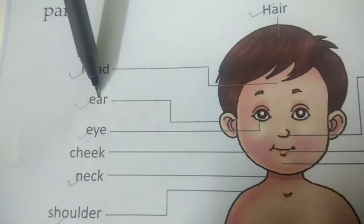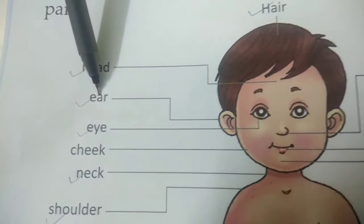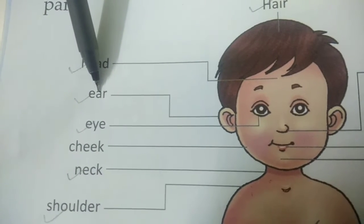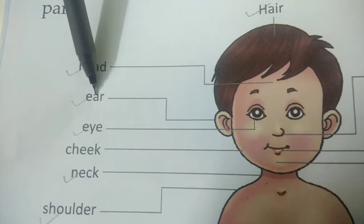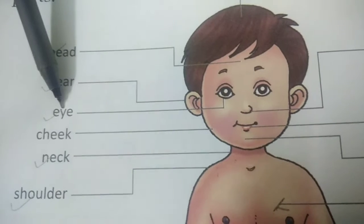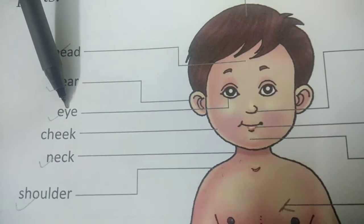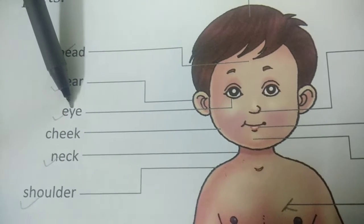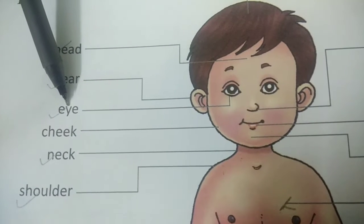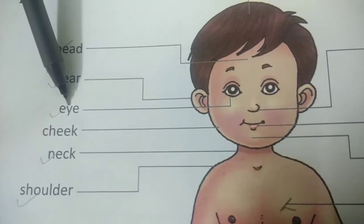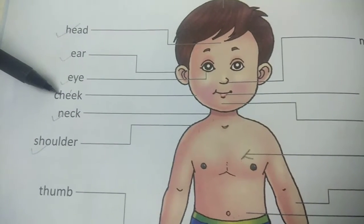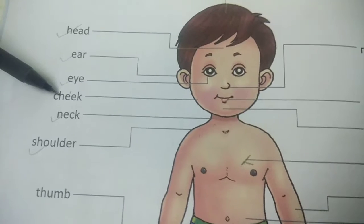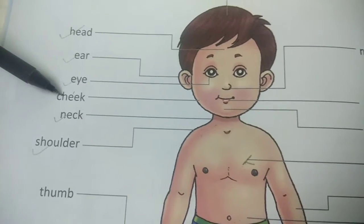Ear: one of the five sense organs which enable us to hear sounds. Eye: our eyes help us to see the different shapes, colors, light and darkness. Cheek: the soft skin on each side of the face below the eyes.